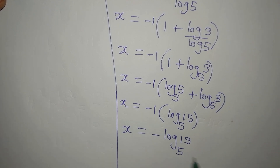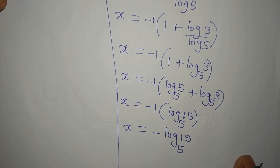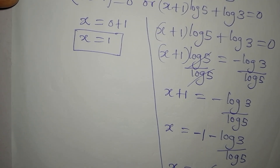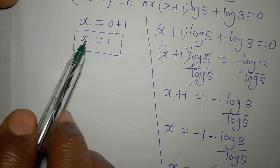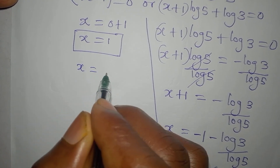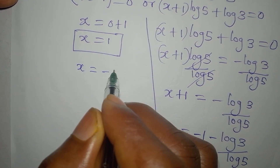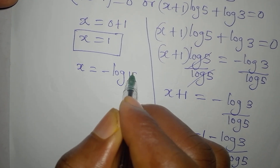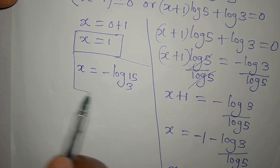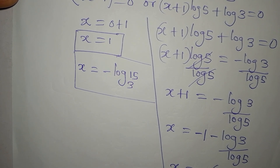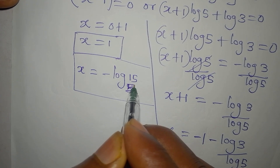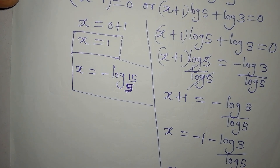So this becomes the other value of x. To summarize: one value is x equals 1, and the other is x equals negative log 15 to base 5. Thank you for watching.